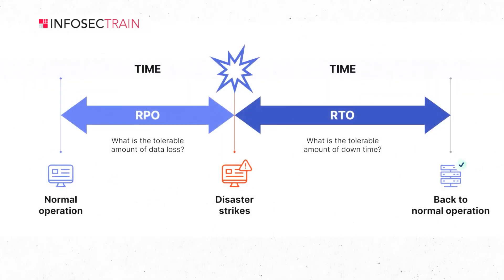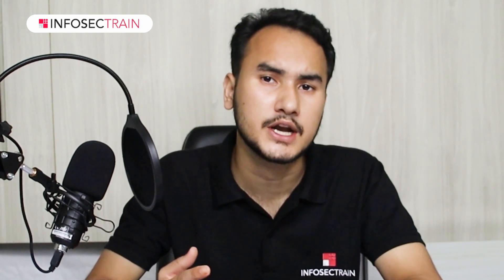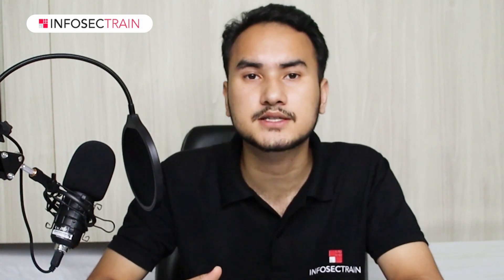The key difference between them: RPO focuses on data loss and determines how much data can be lost during a disaster recovery process, while RTO focuses on downtime and establishes the maximum allowable time to restore systems and services after a disruption. In conclusion, RPO and RTO are vital components of disaster recovery planning, enabling organizations to set clear objectives for data protection and business continuity.